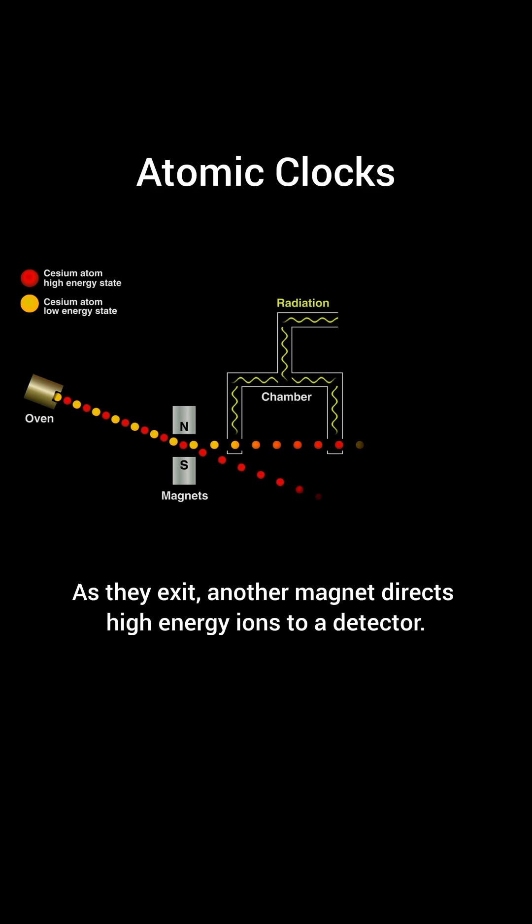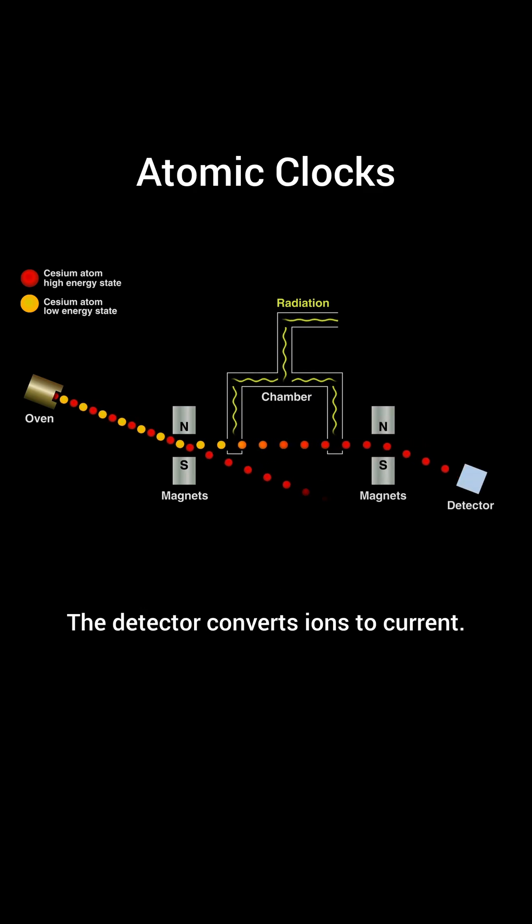As they exit, another magnet directs high energy ions to a detector. The detector converts ions to current.